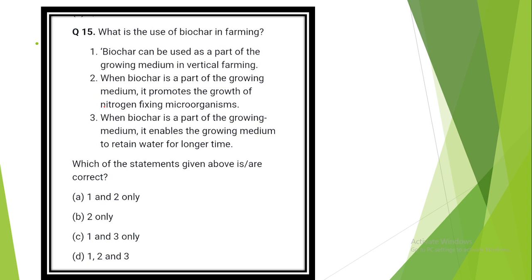Question number 14. Consider the following statements. The answer is option D. Coal ash contains arsenic, lead and mercury. Coal-fired power plants release sulfur dioxide and oxides of nitrogen into the environment. High ash content is observed in Indian coal. Question number 15. What is the use of biochar in farming? The answer is option D: 1, 2 and 3. Biochar can be used as part of growing medium in vertical farming. When biochar is part of growing medium, it promotes the growth of nitrogen fixing microorganisms. It enables the growing medium to retain water for a long time.